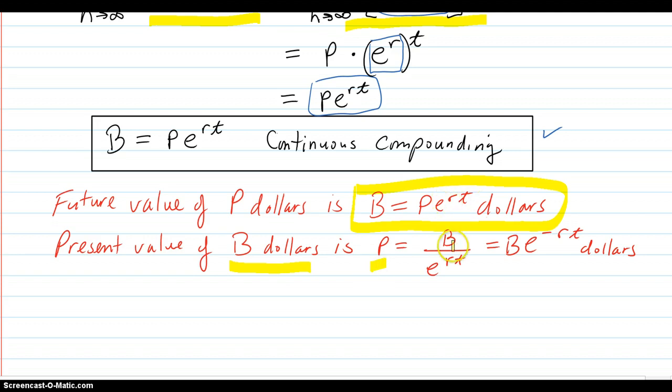And the present value of, to obtain B dollars in the future, is what you would put in now. That's the P. And you just solve this. You just divide by e to the rt on both sides and you get this. And writing it with a negative exponent, you get this.